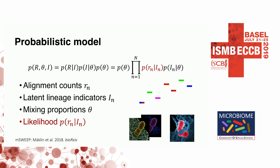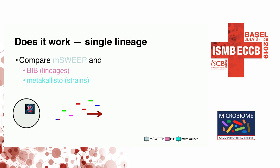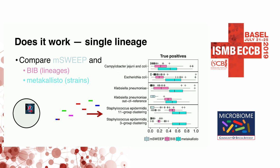We first went to a problem setting where we have just one lineage in our sequencing reads. There are other methods to identify which lineage it truly belongs to, so we can compare against them. We took a few other methods and asked whether we can identify the lineage properly. It turns out the other methods don't really, but with ours it's fairly good — except one special case. We also look at how big errors we make in lineages that are not present, since the model is probabilistic.